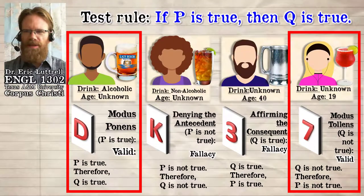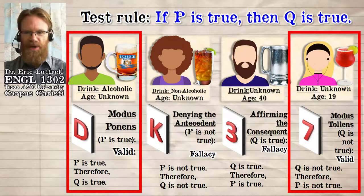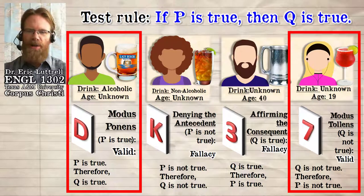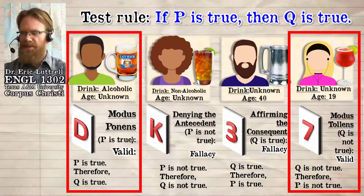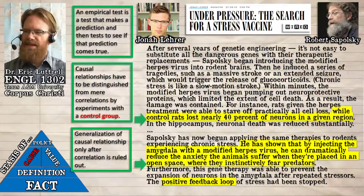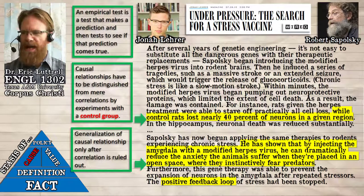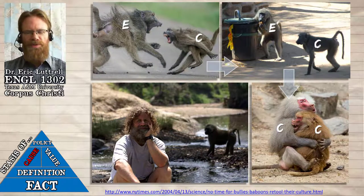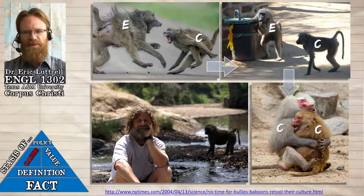These are the same two logically valid modes of argument — modus ponens and modus tollens — referred to previously. Logically, it's the same as the thought experiment where a bouncer checking underage drinking must check the person drinking something alcoholic whose age is unknown, and the 19-year-old whose drink is unknown. You need to check more than just that the consequent happens; you also have to check that the consequent does not occur when the antecedent is absent. Sapolsky compared his control group of rats and saw they lost nearly 40% of the neurons in a particular brain region.